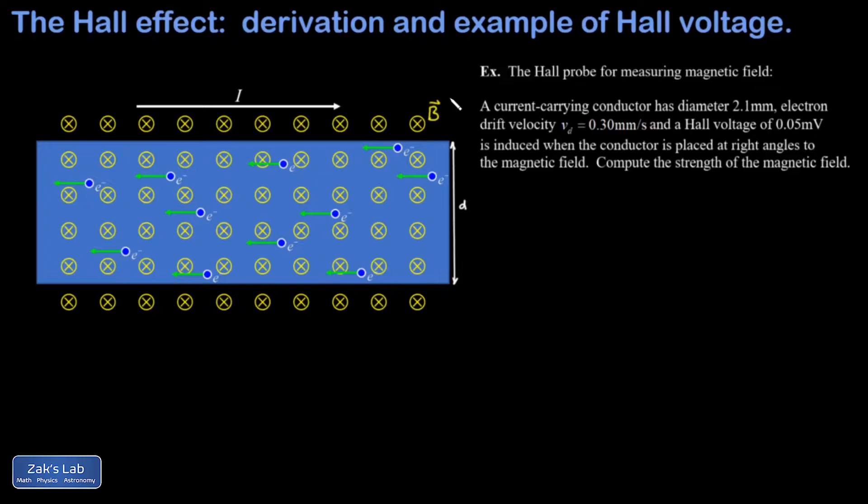what's actually happening is that electrons are moving to the left through the conductor with an average velocity that we call the electron drift velocity.